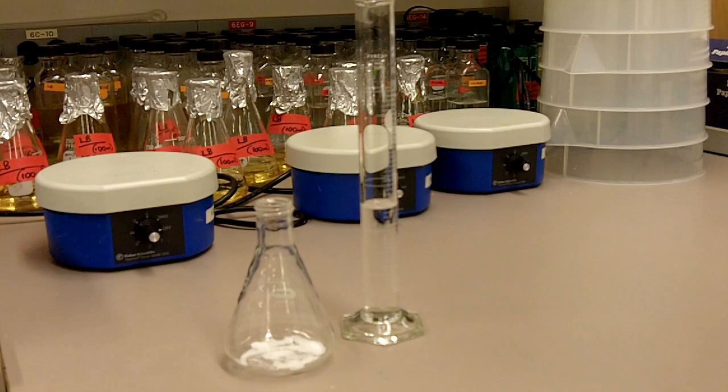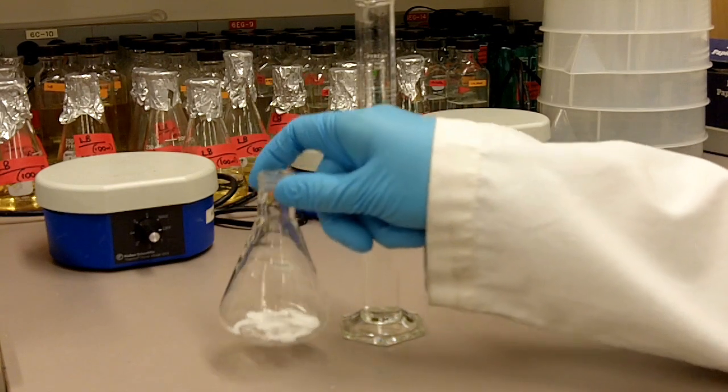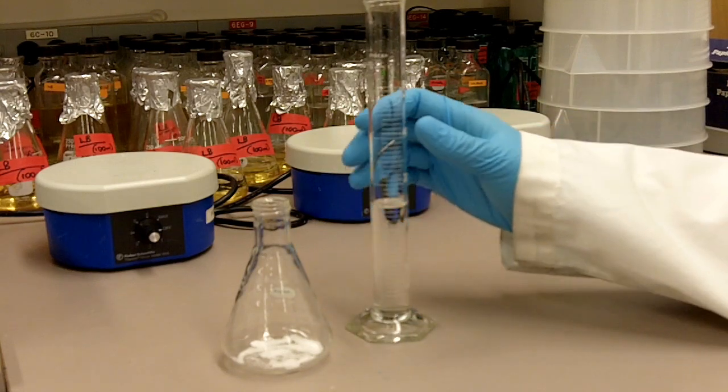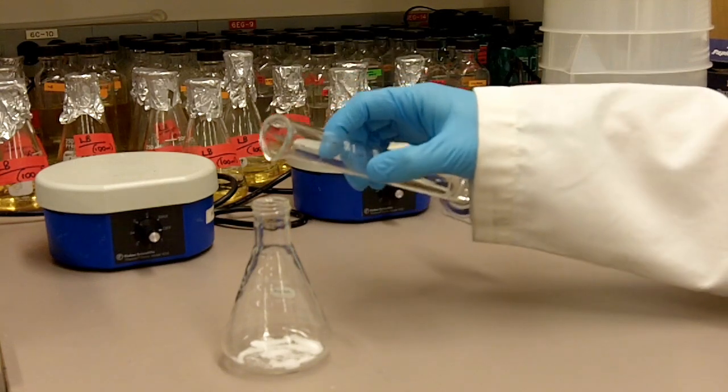To make 25 ml of 1% gel, I have already weighed out 0.25g of agarose and 25 ml of TBE buffer so we'll just add the TBE buffer to the agarose right now.